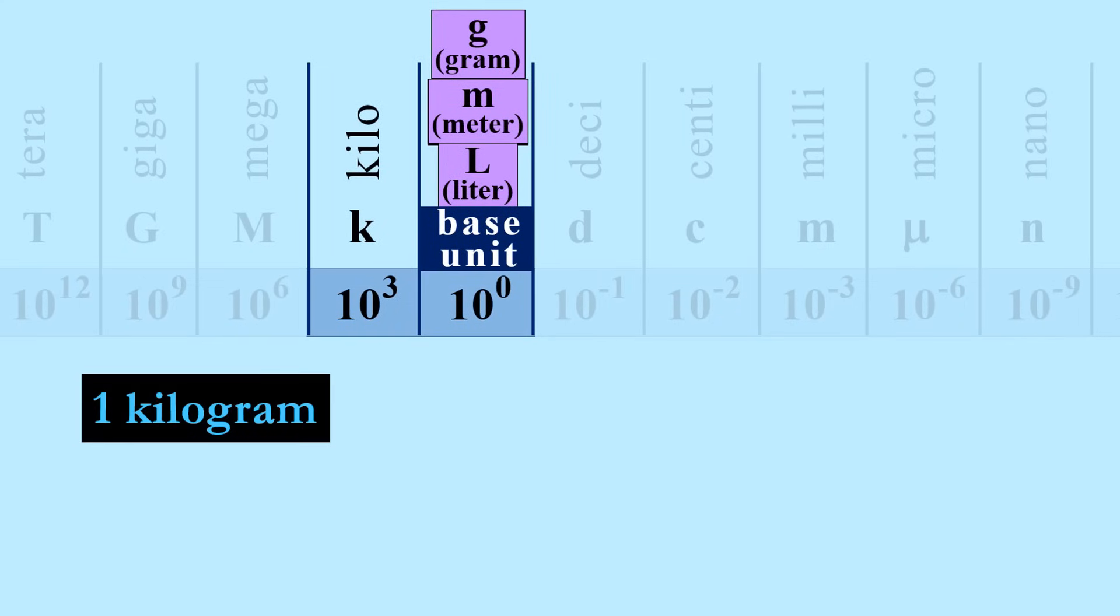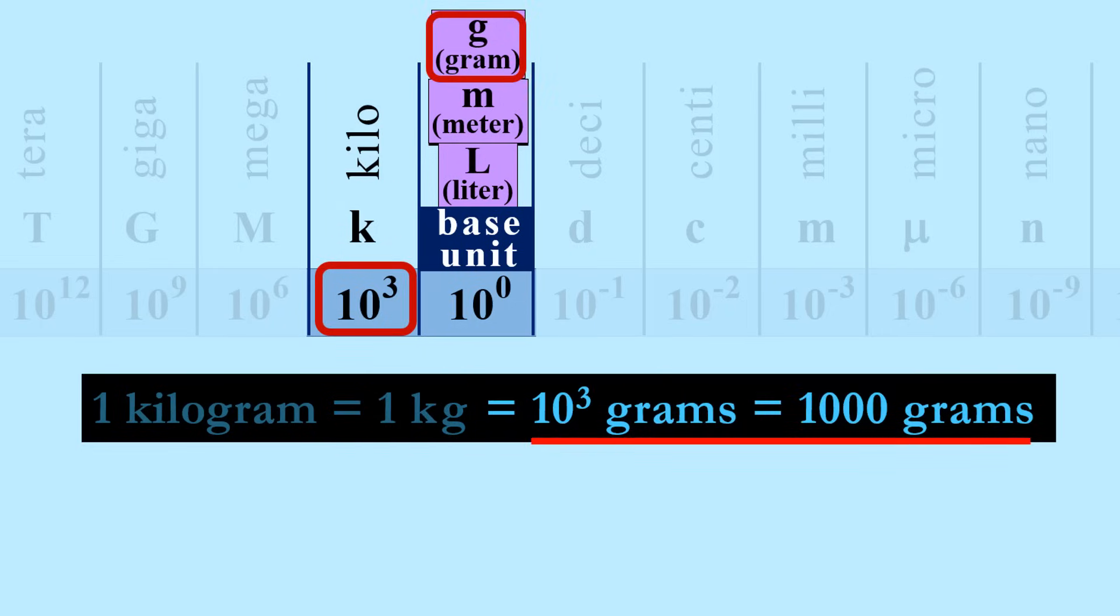For example, in one kilogram, kilo is the prefix and gram is the base. It can be abbreviated with their symbols, kg for kilogram, and its meaning comes from the exponent. Kilo is 10 to the third, so kilogram is 10 to the third grams, or 1000 grams.